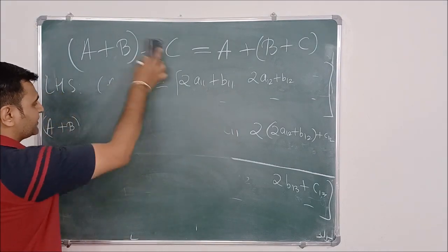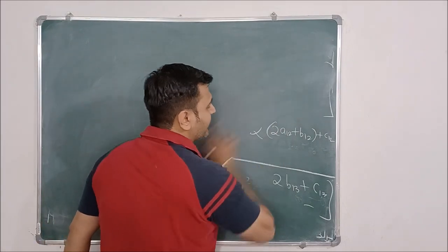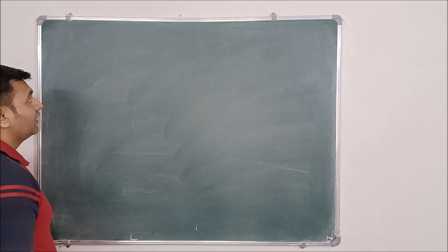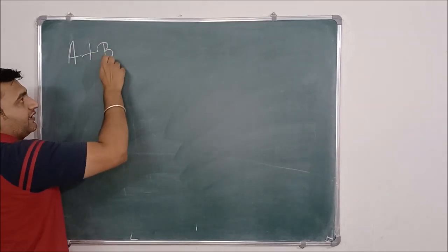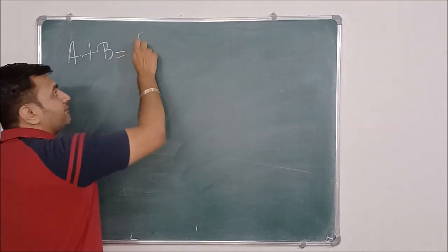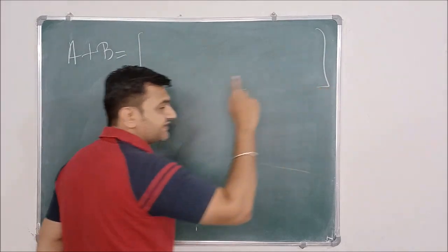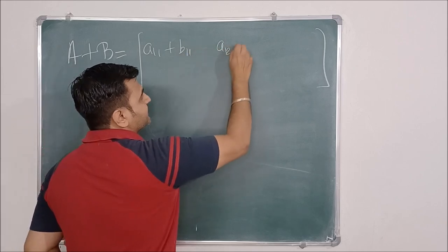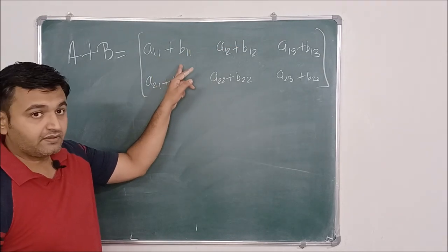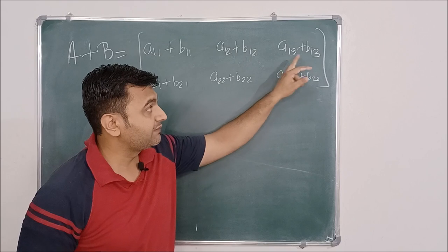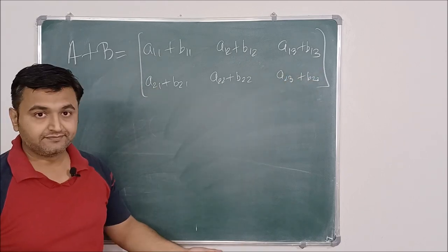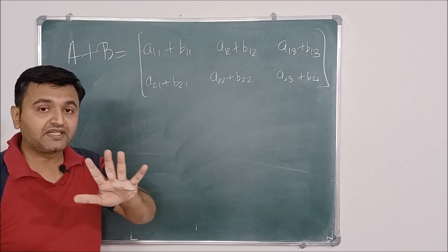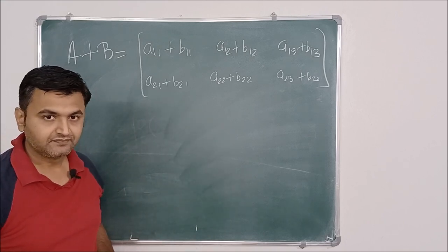Now let me define addition in the standard way — you simply add component-wise. So A+B is defined as the matrix with entries A_{ij}+B_{ij} at each position: A11+B11, A12+B12, A13+B13, A21+B21, A22+B22, A23+B23. We will see that under this standard operation, all five properties of vector addition are satisfied.